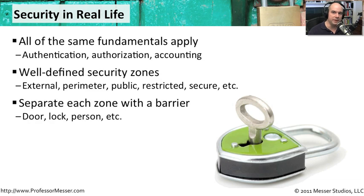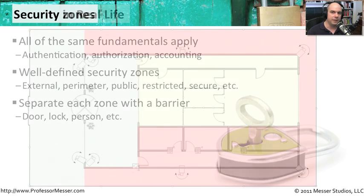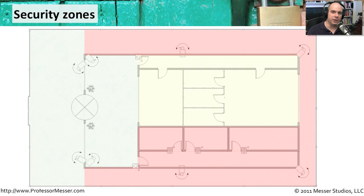We usually separate zones with a barrier of some kind. There is a wall, there's a door, there's a process you have to go through. Sometimes there is a physical guard in place to make sure the only people getting into that security zone are the ones that are authorized to be in that area of your building. It's very common for security professionals to take a blueprint of the building, start dividing off the sections, start creating different areas and different zones, and building in the type of things that they'll need.